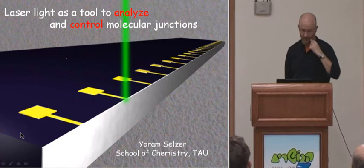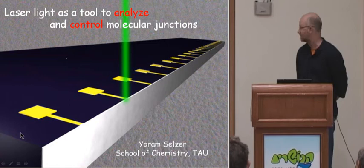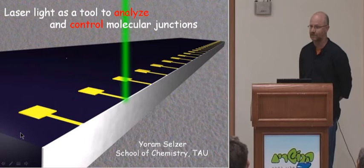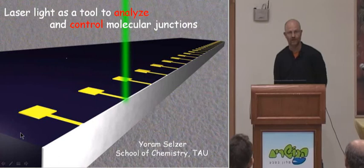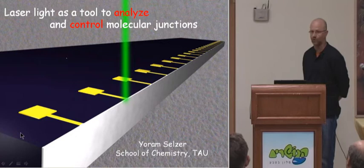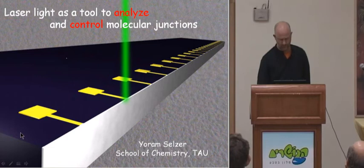What I'll describe today is an effort we are currently doing to see what we can do with lasers and molecular junctions. We are moving in two parallel routes. One, we try to analyze processes taking place inside junctions while they conduct — spectroscopy of molecular junctions. The other is to use light to control the conductance properties of junctions. Today I will show you examples, one from each route.